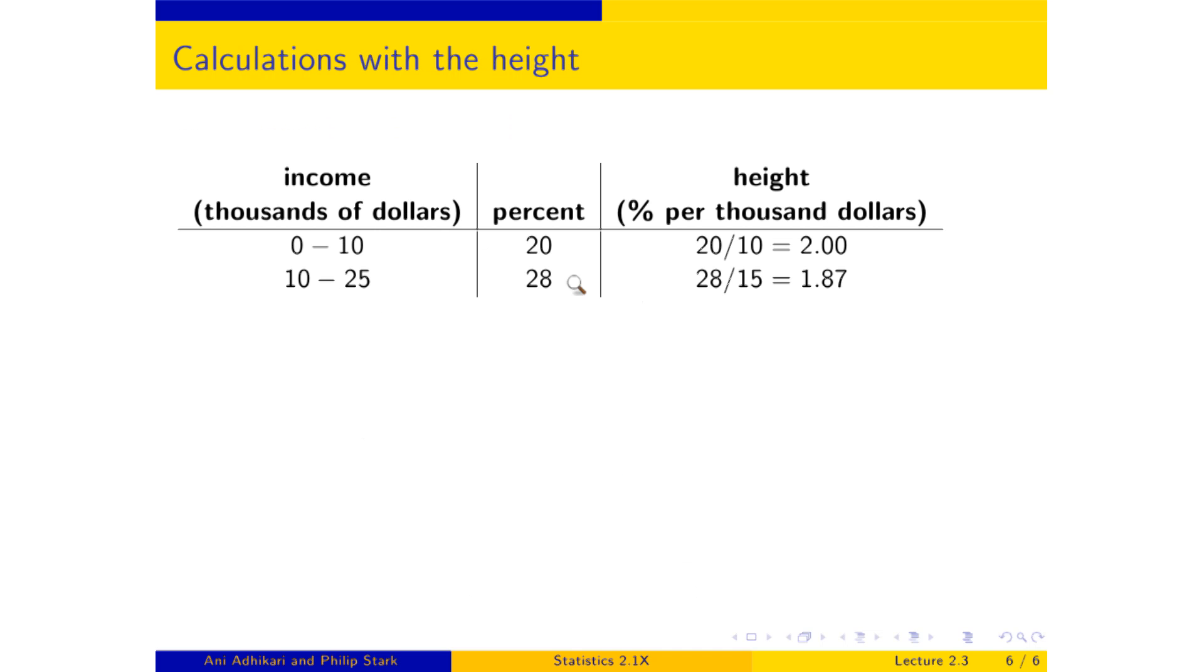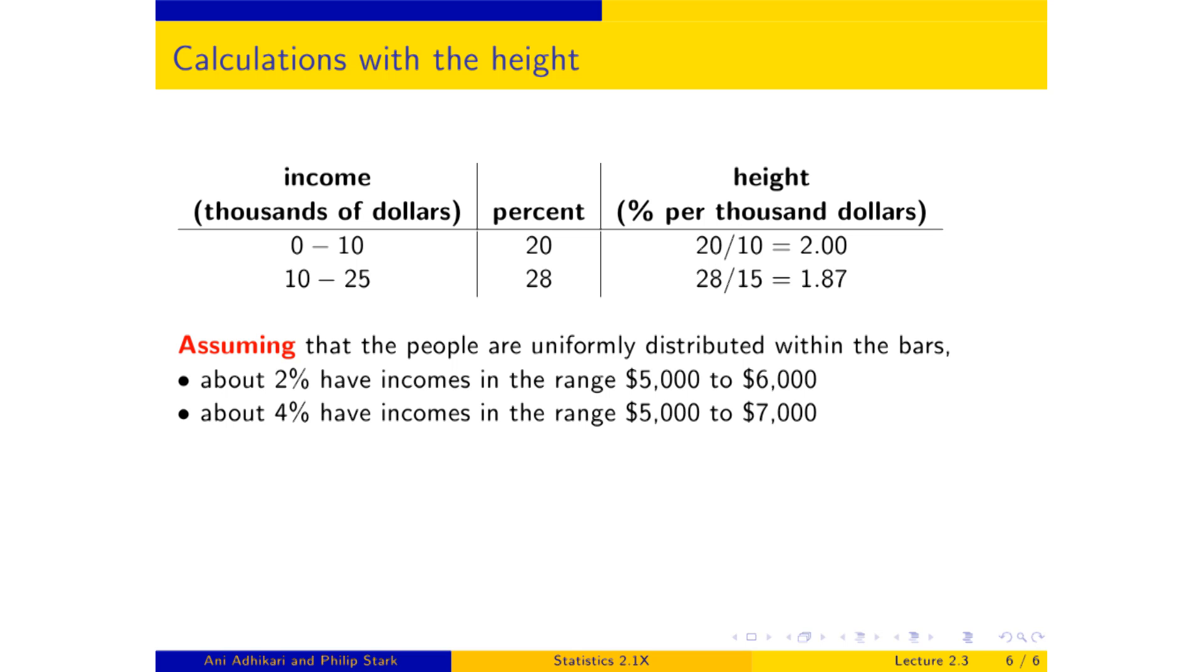Taking a look at the numbers again, what we can tell by the discussion that we've just had is under the simplifying assumption that people are uniformly distributed within bars, 2% have incomes in the range 5 to 6, so what percent have incomes in the range 5 to 7? Well, that's 5 to 6, followed by 6 to 7, and so 4% have incomes in that range.